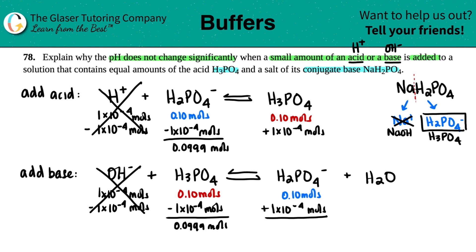So let's see. 0.1 plus 1 times 10 to the negative fourth. Yeah. And you get 0.1001 moles. 0.1001 moles.